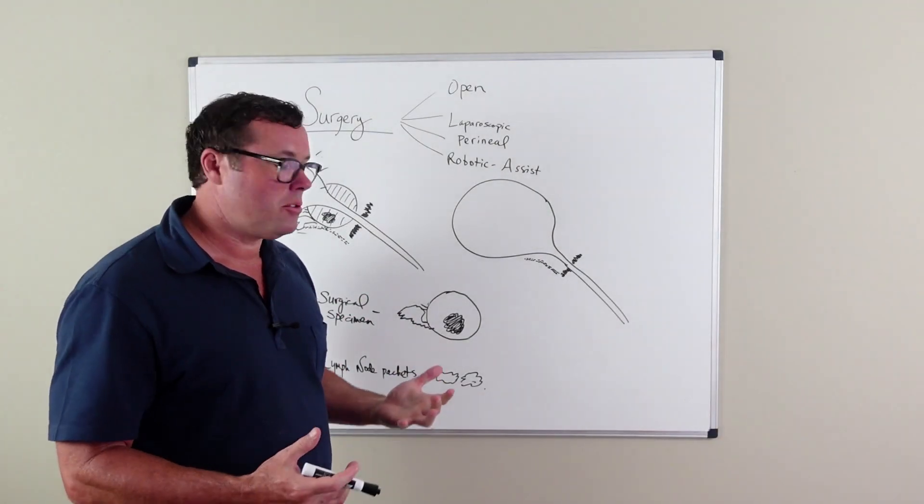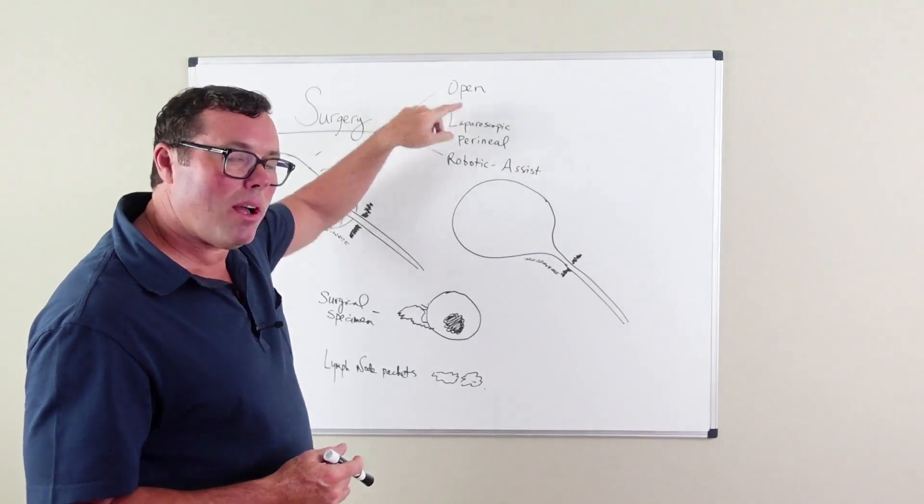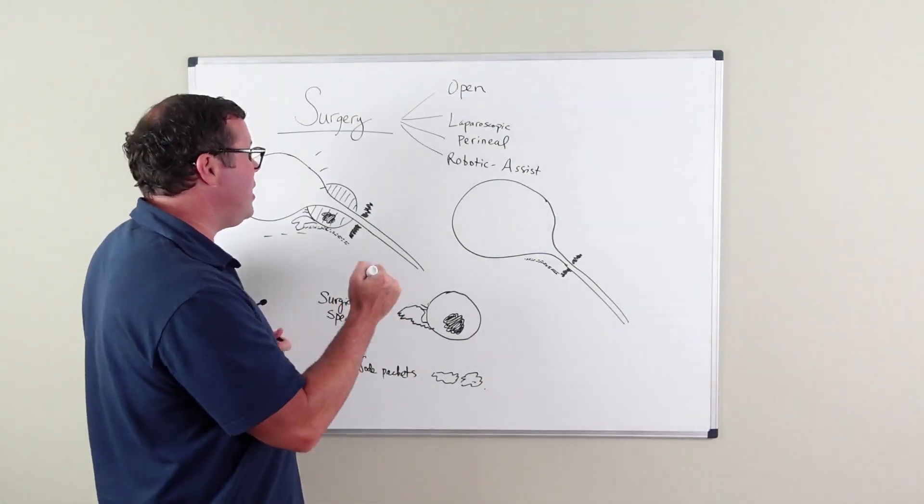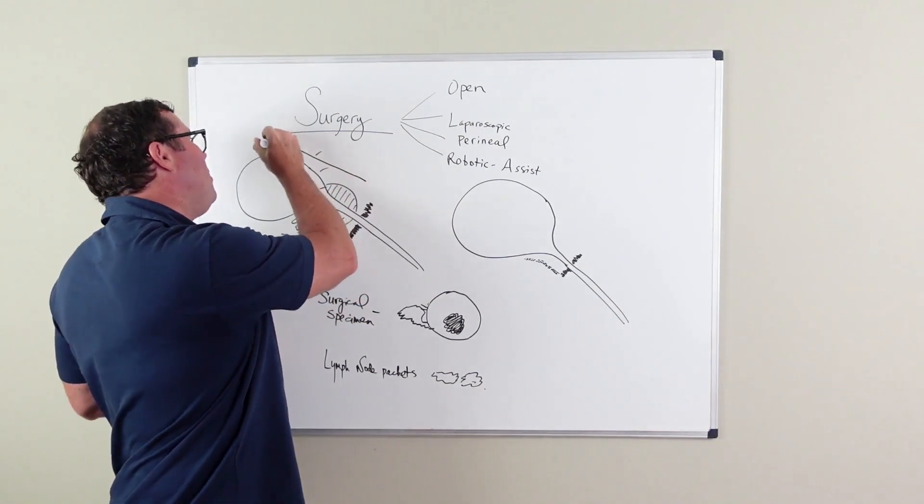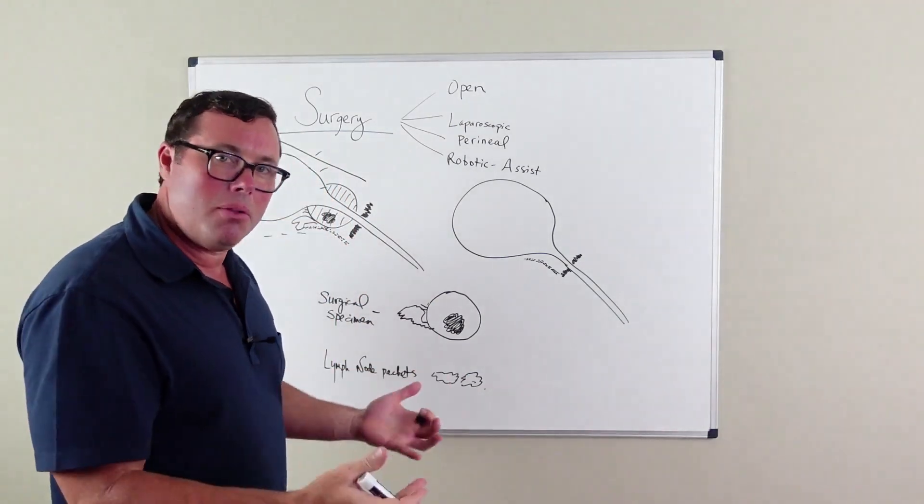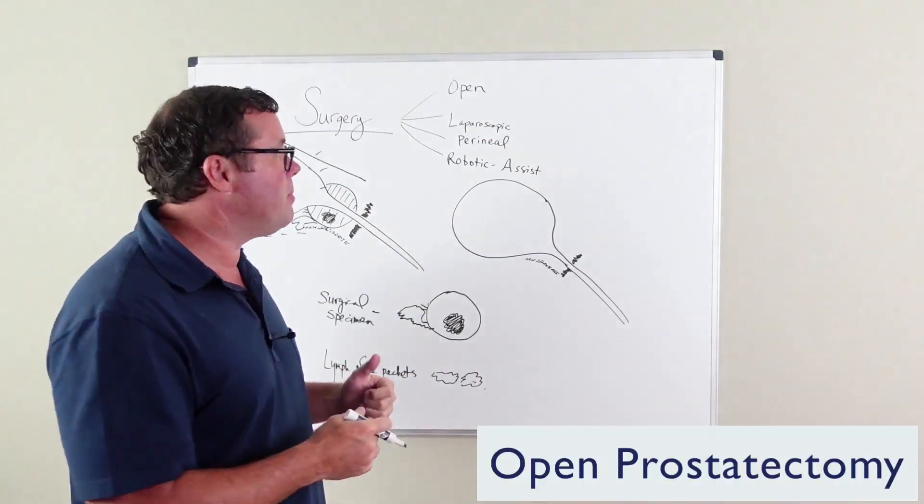There's different types of surgery. Traditionally, prostates were removed through an incision. The incision extended from the pubic bone all the way up to below the belly button. This is called open prostatectomy.